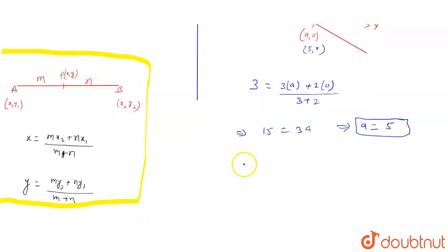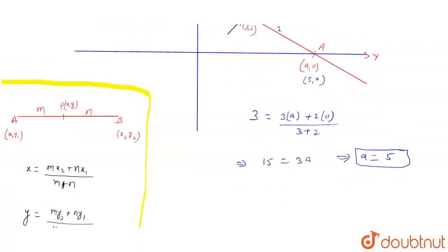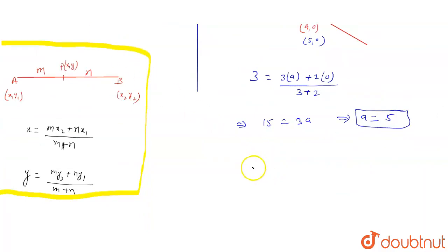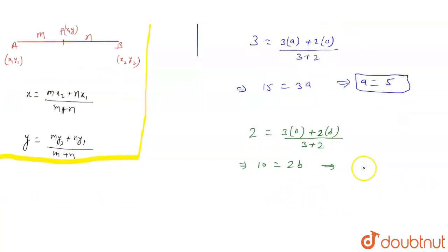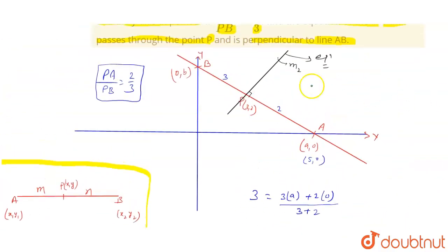Similarly, for the y-coordinate: 2 = (3·0 + 2·b) / (3 + 2). So 5 × 2 = 10 equals 2b, which gives b = 10/2 = 5. We got the value of b also, meaning point B is (0, 5) and point A is (5, 0).